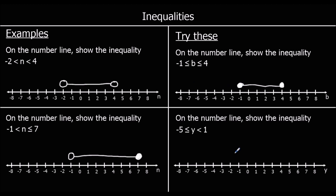And the second one: on the number line, show the inequality y is bigger than or equal to negative 5 and less than 1. We don't colour in the 1 circle because it cannot equal 1, and we join the two up. So it can be anything in between minus 5 and 1 — it can equal minus 5, but it can't equal 1.